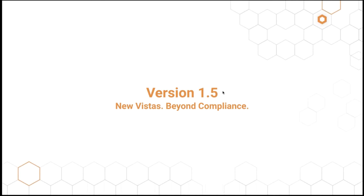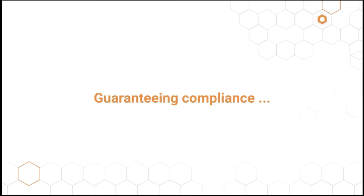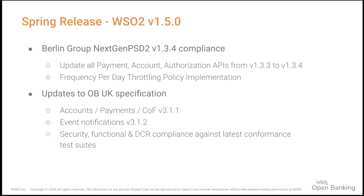Let's talk about the latest release of WSO2 open banking solution — version 1.5.0 — where we focus not only on mere compliance but also on going beyond it. WSO2 open banking solution is a purpose-built solution for regulatory compliance. In this spring release, we have updated the Berlin Group next-gen PSD2 APIs to version 1.3.4 to stay compliant. With this, we updated all payment APIs, account APIs, and authorization APIs from 1.3.3 to 1.3.4. One of the main functional features added is the frequency per day throttling policy.